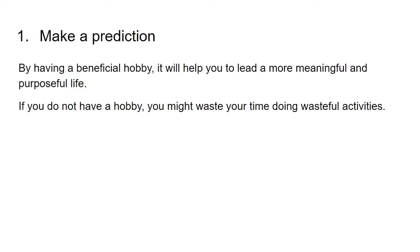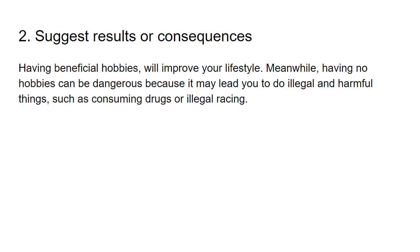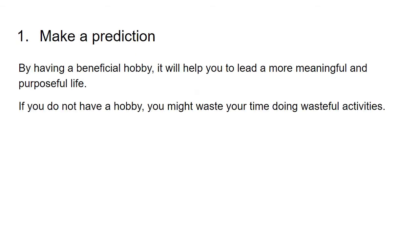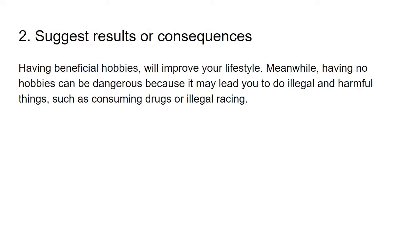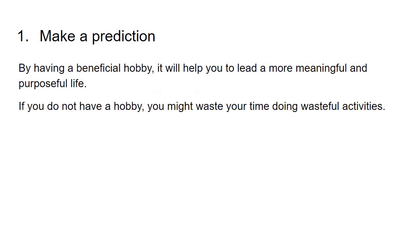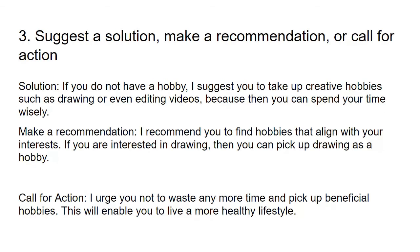Suggesting a result or consequences is quite similar to making a prediction. For example: 'Having beneficial hobbies will improve your lifestyle. Meanwhile, having no hobbies can be dangerous because it may lead you to illegal and harmful things such as consuming drugs or illegal racing.' Prediction and suggesting a result of consequence overlap quite a bit, so just choose what you want. Look at the topic — for example, with pollution, you could say if pollution is not curbed, the world will be destroyed. That is both a consequence and a prediction. For hobbies, it is more restrictive.